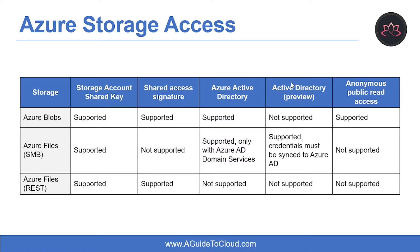The next option is Azure Active Directory Domain Services (ADDS) authorization, which is active for Azure files. Azure files support identity-based authorization over Server Message Block (SMB) through ADDS, and you can use RBAC for fine-grained control over client access to Azure file resources. The next option is shared key authorization, which relies on your account access keys and other parameters to produce an encrypted signature string passed via the request authorization header.